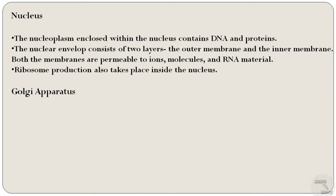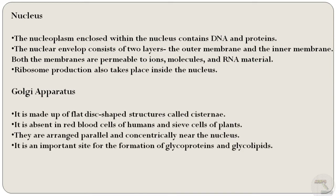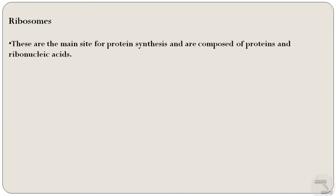Next is the Golgi apparatus. It is made up of flat disc-shaped structures called cisternae. It is absent in red blood cells of humans and seed cells of plants. They are arranged parallel and concentrically near the nucleus, and it is an important site for the formation of glycoproteins and glycolipids. The ribosomes are the main site for protein synthesis and they are composed of proteins and ribonucleic acids.